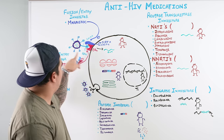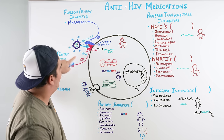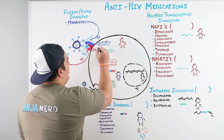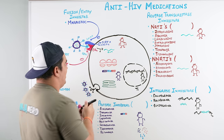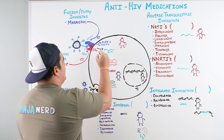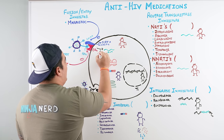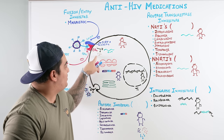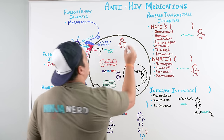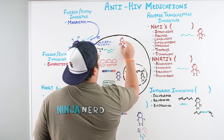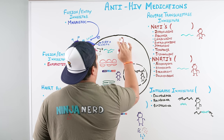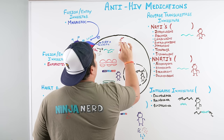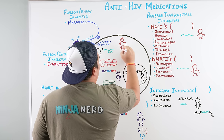Once inside the host cell, HIV also releases an enzyme called reverse transcriptase. Reverse transcriptase takes RNA and converts it into DNA — the opposite of normal transcription. This produces viral DNA that can be incorporated into the host cell's DNA, which is a serious problem.